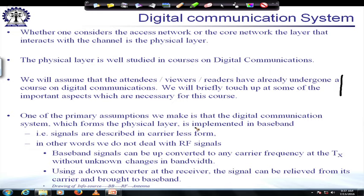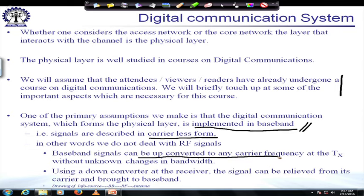One of the primary assumptions we make in digital communications is that signals in the physical layer are implemented in baseband — in carrier-less form with no carrier representation in the signal. This is achieved because baseband signals can be up-converted to any carrier frequency at the transmitter without unknown changes in bandwidth. When we do conversion from baseband to RF or passband, we know exactly what bandwidth changes occur.